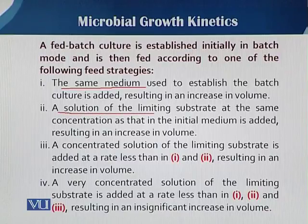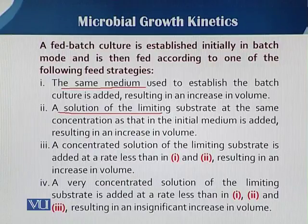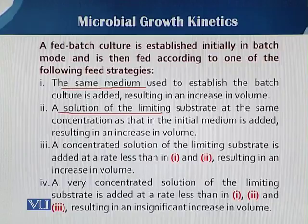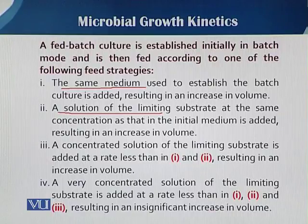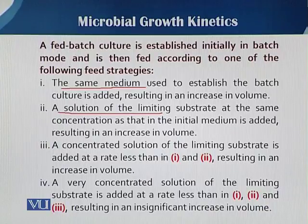In the second strategy, we do not use all the ingredients. If we know during the fed batch that a specific nutrient will be exhausted or become limiting — affecting growth or other processes — then we only add those substrates called the limiting substrate. So in the second strategy, we use only the limiting substrate, but at the same concentration as mentioned in the initial medium.